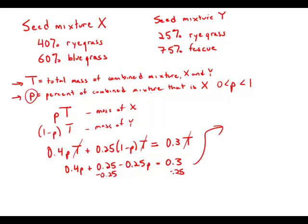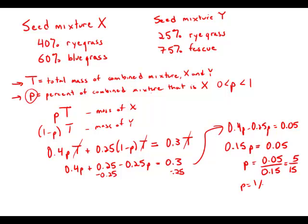And this gives me 0.4P minus 0.25P equals 0.15P. And 0.4 minus 0.25 is 0.15, so 0.15P equals 0.05. P equals 0.05 divided by 0.15. Move the decimals. That's 5 over 15, which is one third, which as a percent is 33 and a third percent.